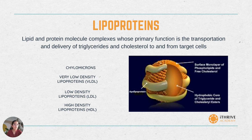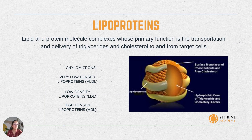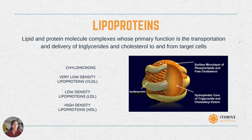Next, we discuss VLDLs or very low-density lipoproteins. These are particles produced by the liver and are triglyceride-rich. Similar to chylomicrons, the size of VLDL particles can vary depending on the quantity of triglycerides carried in the particle; however, VLDL particles are smaller than chylomicrons. A key difference is that chylomicrons transport exogenous or dietary fats, whereas VLDLs transport endogenous fats. Moving on to low-density lipoproteins or LDLs, these are particles derived from VLDL particles and are even further enriched in cholesterol.